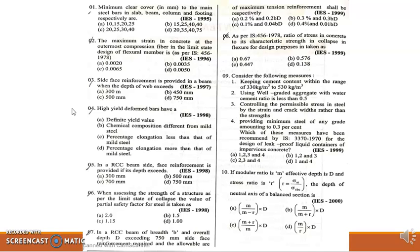Next question: When assessing the strength of the structure as per the limit state of collapse, the value of partial sensitivity factor for steel is taken as. For steel, partial sensitivity factor is taken as 1.15, so option C is the correct answer.